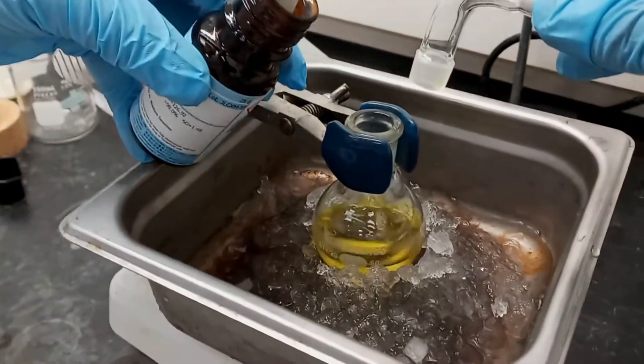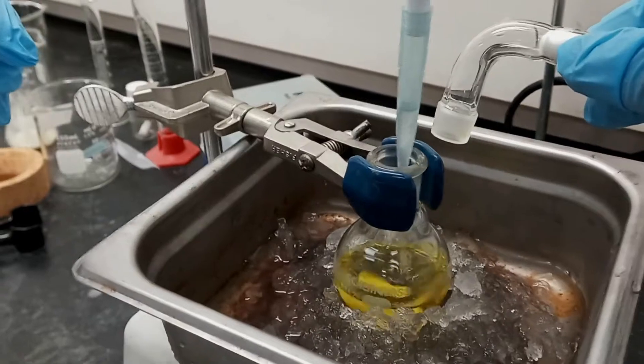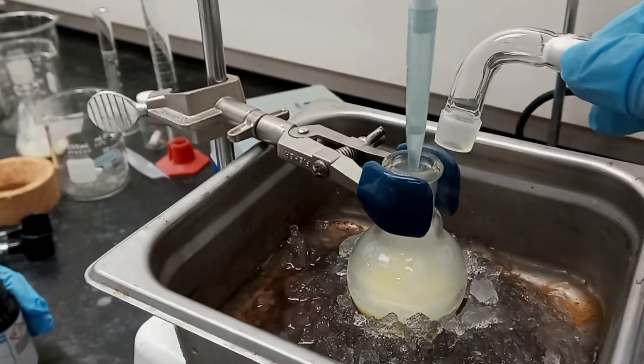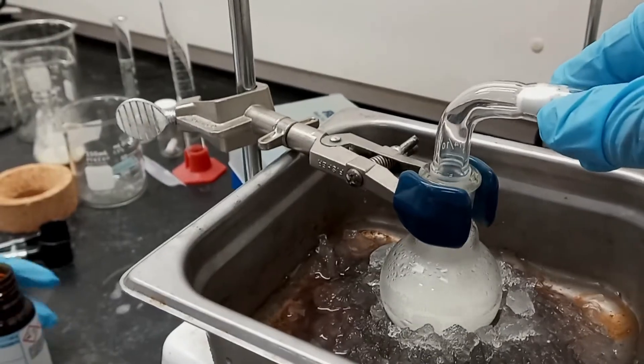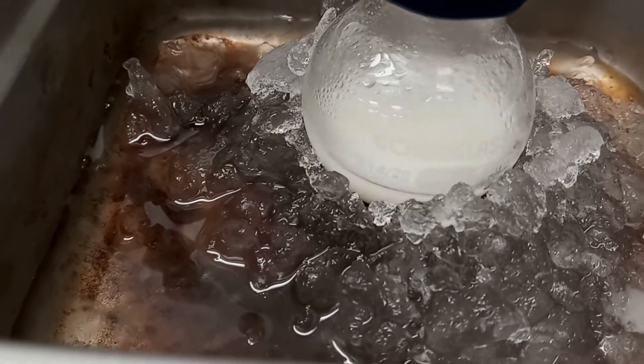Using a micropipette, we transferred into our solution 244 microliters of oxalyl chloride. We also added 358 microliters of triethylamine, but I forgot to capture it.